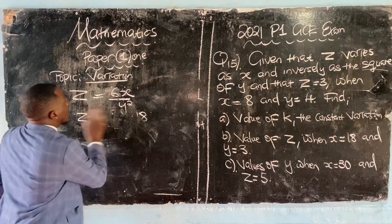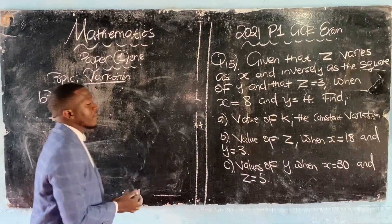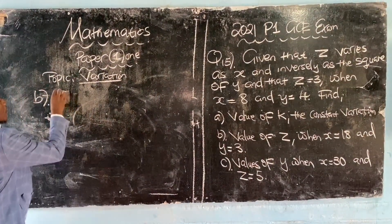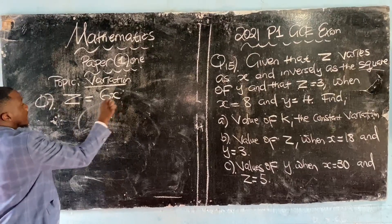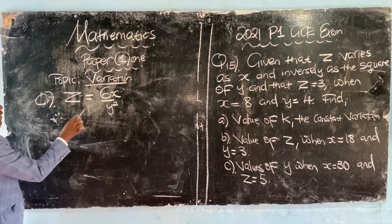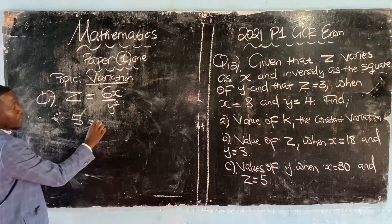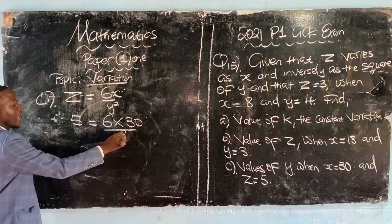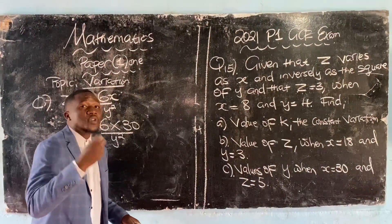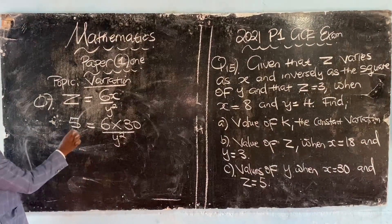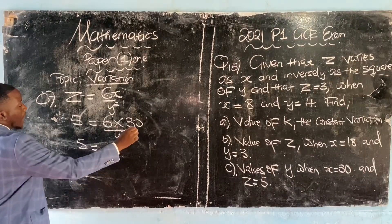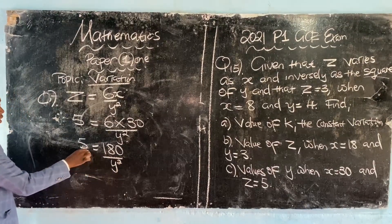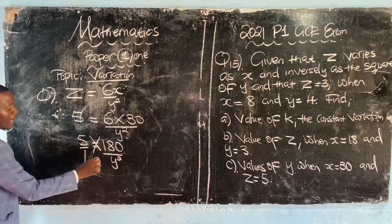Lastly, we're finding the values of y (notice the language is plural) when x is 30 and z is 5. z equals 6x over y squared. Put 5 for z and 30 for x. 5 equals 6 times 30 over y squared. This becomes 5 equals 180 over y squared.